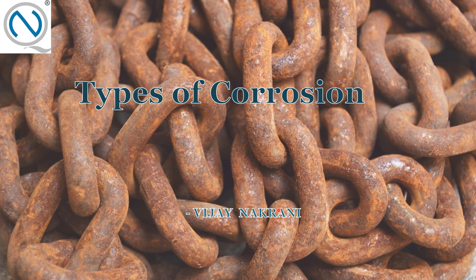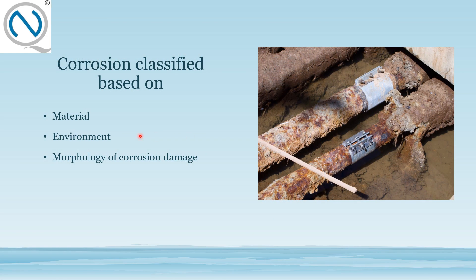This is also very important for everyone to know about the corrosion types. There are so many types of corrosion, but I have covered the basic types for NDT Level 3 Basic exam students. Corrosion is basically classified according to three points: first, the type of material; second, the kind of environment; and third, the morphology of corrosion damage of that particular material or section.